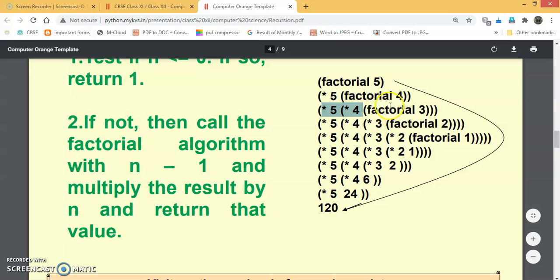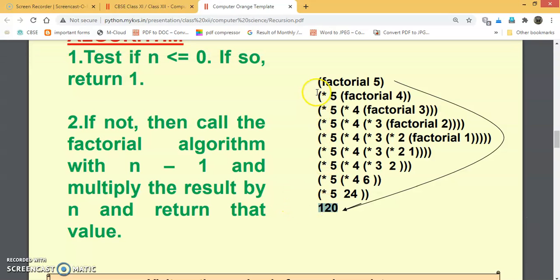When we get factorial of 1, 1 into 2 is 2, then 2 into 3 is 6, 6 into 4 is 24, and 24 into 5 is 120. So factorial of 5 is equal to 120. That is the value produced by the factorial function. That is how without looping you can execute the function and find the output using recursion.